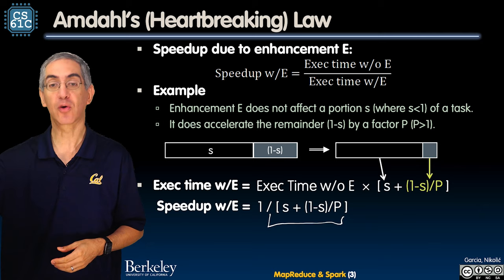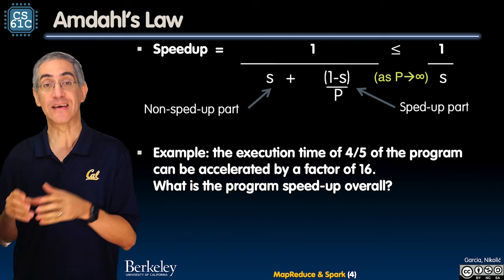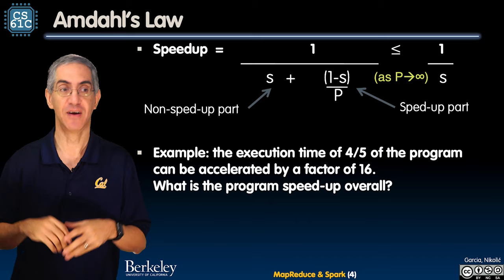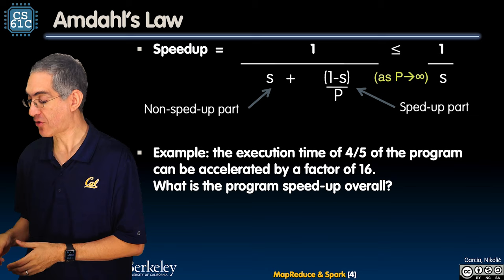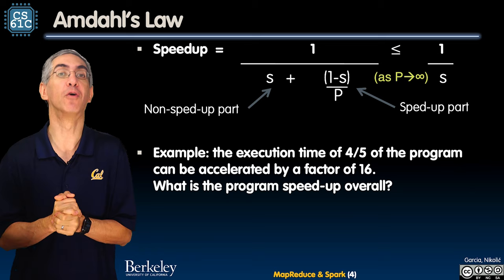Let's rewrite it slightly differently. The speedup is 1 over S — the fraction non-sped-up — plus (1 minus S) over P — the fraction that is sped up. In the perfect world, as the speedup factor P goes to infinity — if I have a million cores, a trillion helpers working on this — that term goes to zero, and you're left with 1 over S. The speedup can be no bigger than 1 over S.